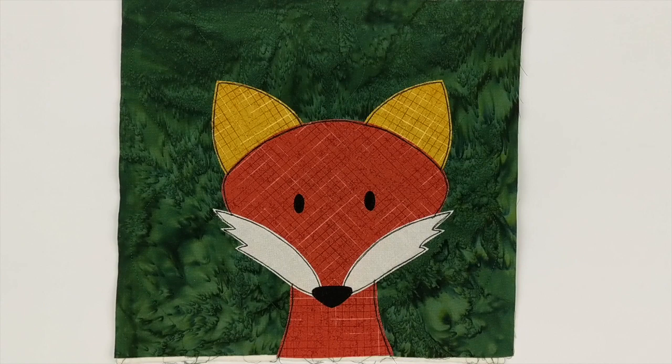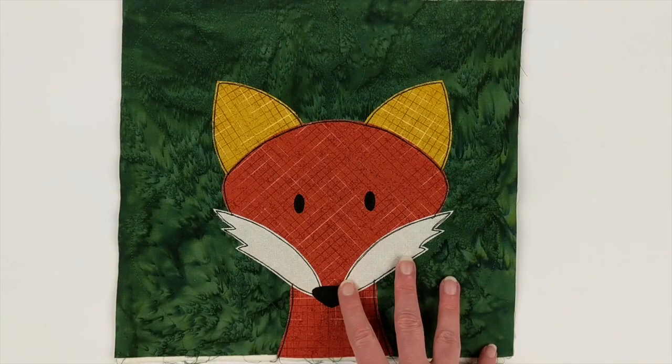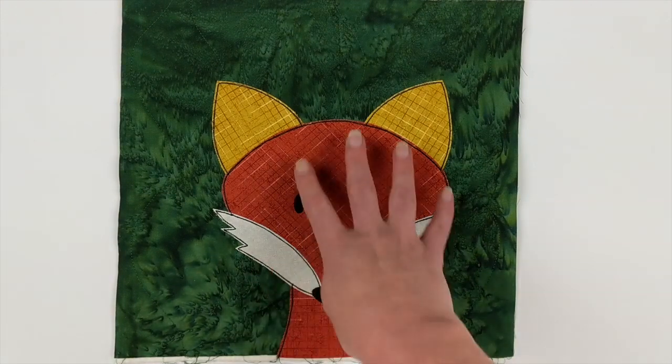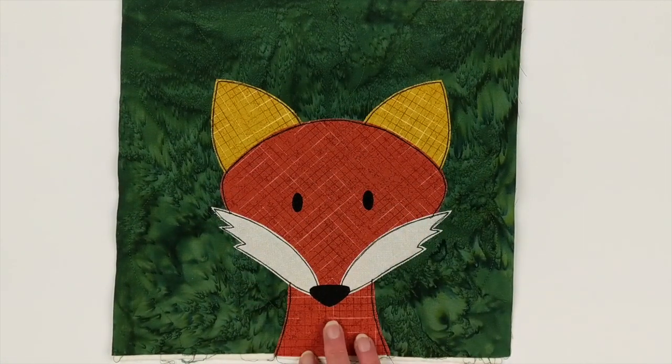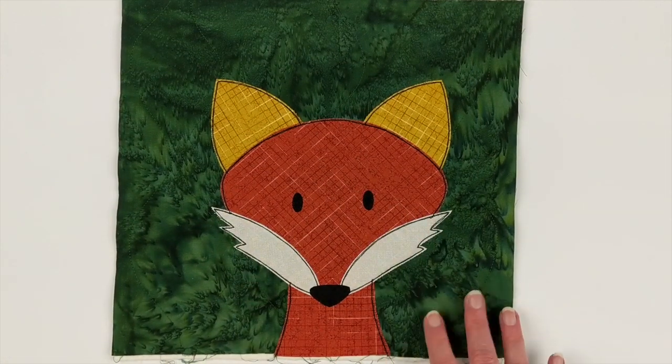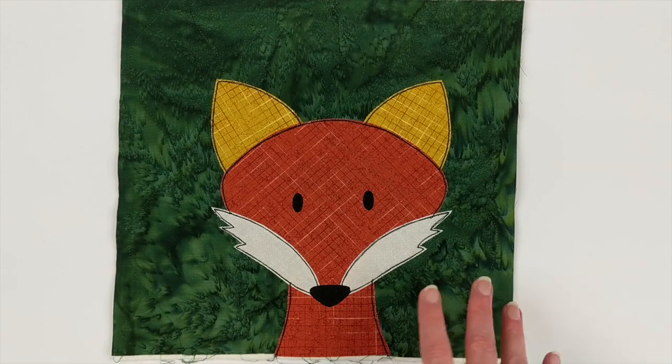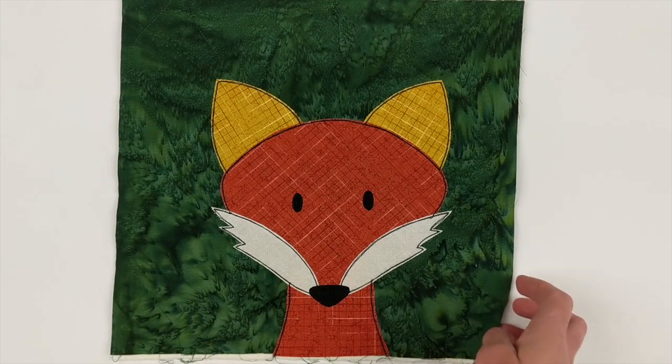And that is how you make that fox block. So in this one, I've done them in very traditional colors. These all come from the fox colors, all come from the warm neutrals fabric bundle. And the green is one of the green batiks from that background. But I wanted to show you a completely different look.